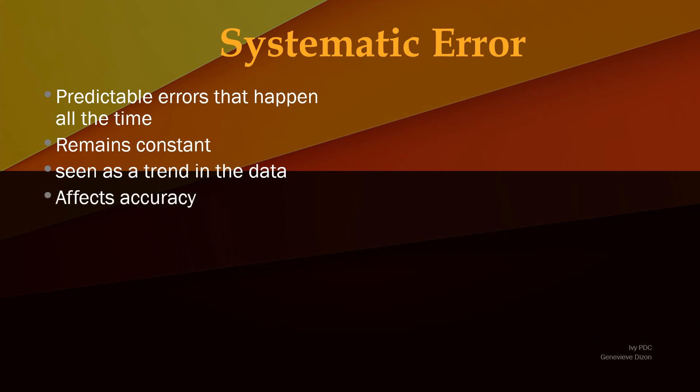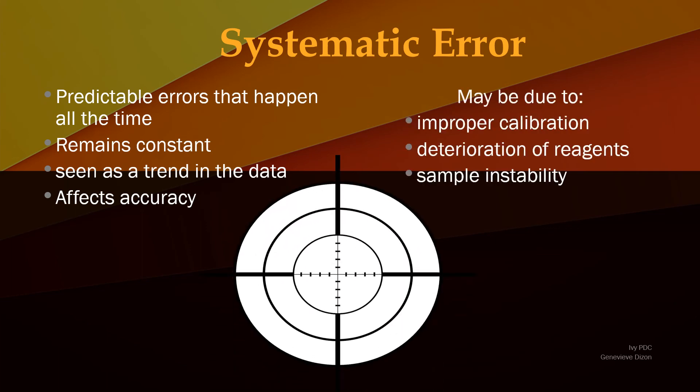Systematic errors are problems in the measurement system. Examples would be improper calibration, deterioration of reagents, and sample instability. The plot given by systematic errors are relatively near with each other because of the same cause.